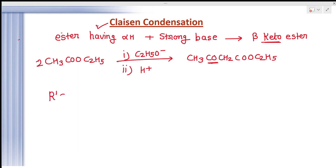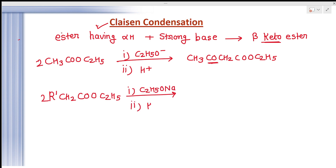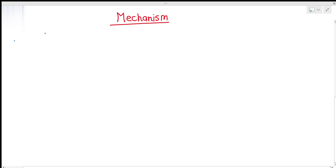For a general reaction, we can write: two molecules of R–CH₂COOC₂H₅ condense in the presence of a strong base — sodium ethoxide — followed by acid treatment, to give R–CH₂CO–CHR–COOC₂H₅. This is the general beta-keto ester product. Now let's see the mechanism and how this reaction is happening.